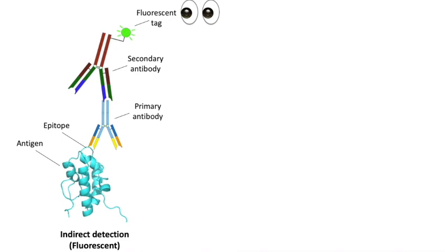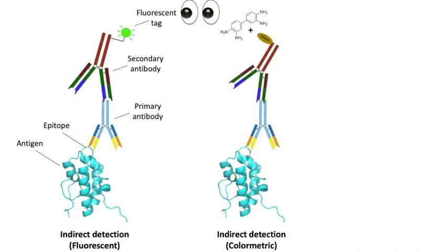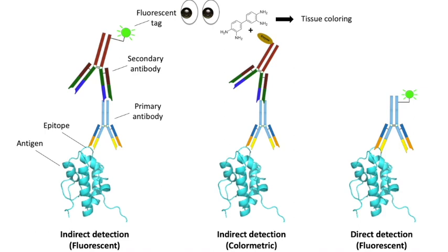Indirect detection of a target protein can also be achieved by the conjugation of an enzyme to a secondary antibody. The enzymatic conversion of a substrate can then lead to tissue or cell coloring — we also refer to this method as indirect colorimetric detection. As a third option, we can also attach the primary antibody with a fluorescent molecule, leading to direct detection of the antigen. This method is, however, less sensitive and often more expensive than indirect detection methods, and therefore indirect detection methods are often preferred in both ICC and IHC stainings.